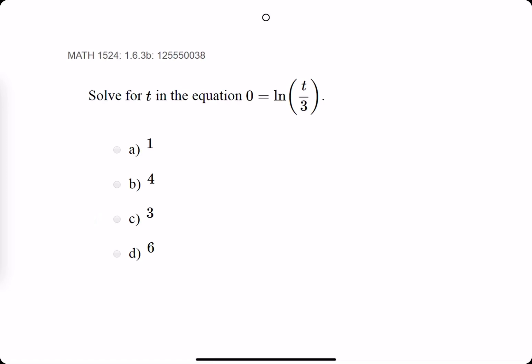Okay, so the goal is to get t by itself on one side of the equation. So the main thing we need to eliminate is the natural log.